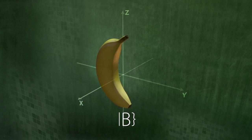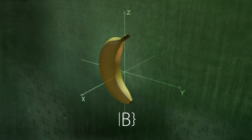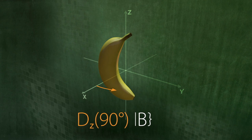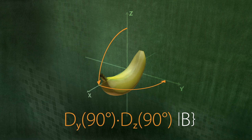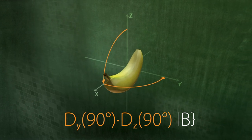We can also perform several rotations one after another. For example, we can first rotate the banana by 90 degrees about its z-axis and then by 90 degrees about its y-axis. The banana is now lying on its back.